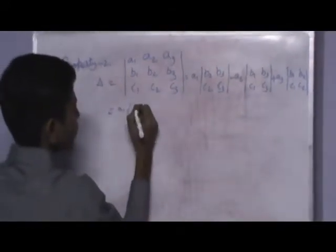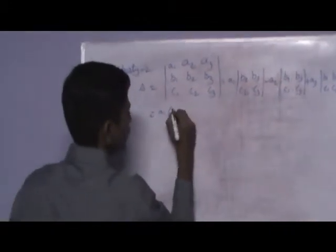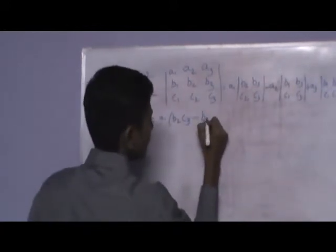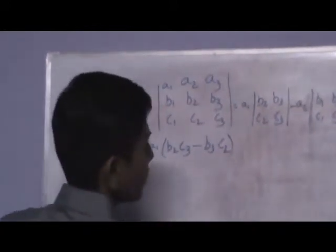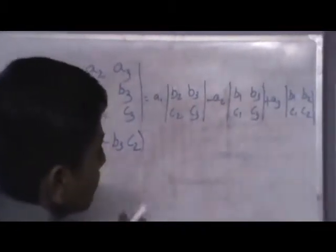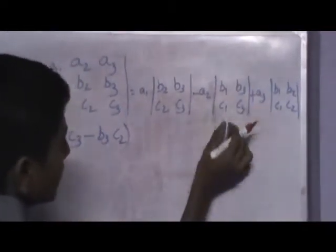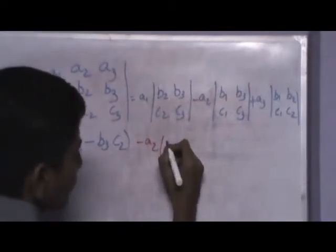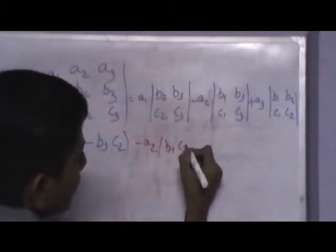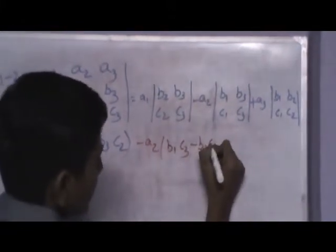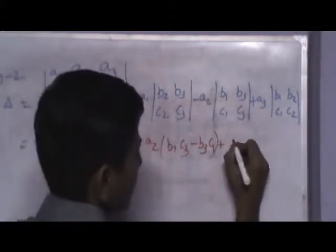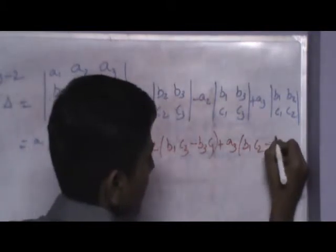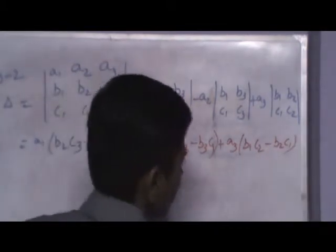Expand it. A1 into B2 C3 minus B3 C2. Then, multiply A2 and expand this determinant B1 B3, C1 C3. Minus A2 into B1 C3 minus B3 C1, plus A3 into B1 C2 minus B2 C1.